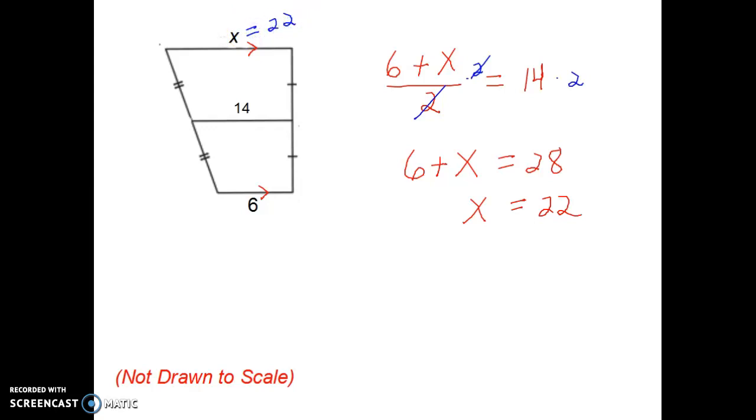And we can check our answer. I could go backwards to check that. If I average 6 and 22, so 22 plus 6 would be 28. Divide it in half. And I would get 14.